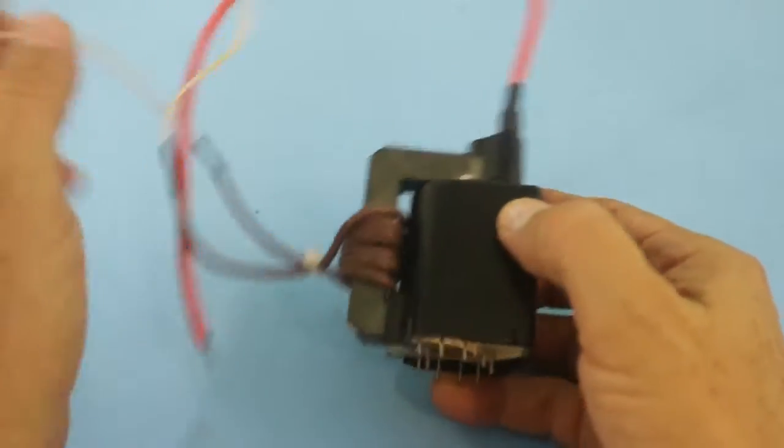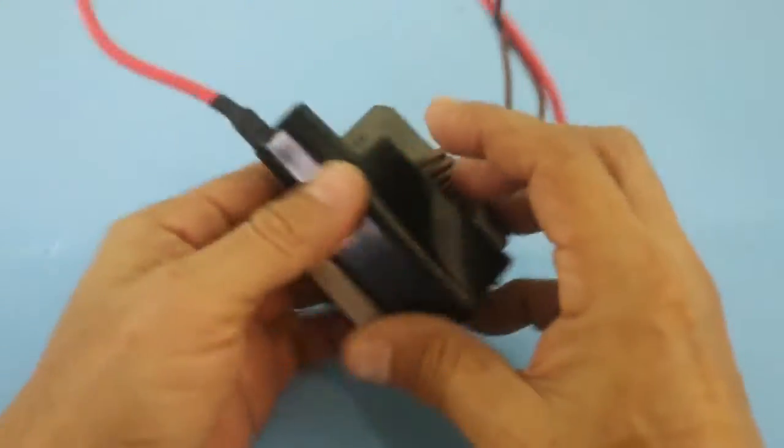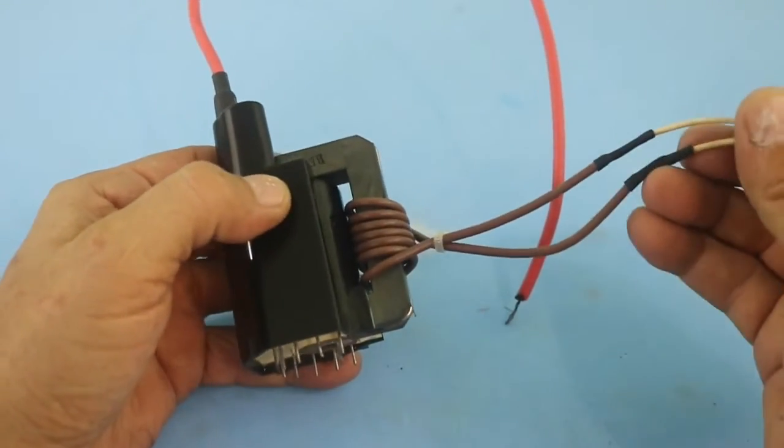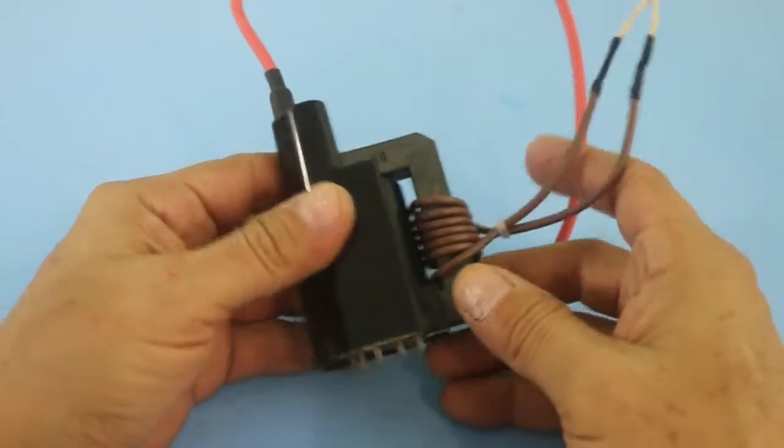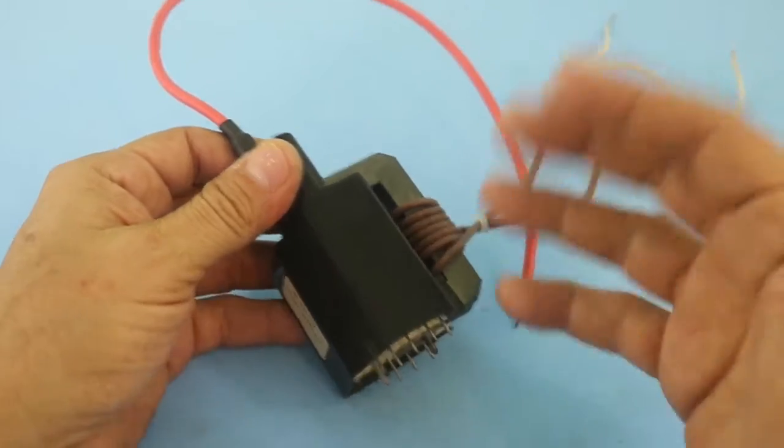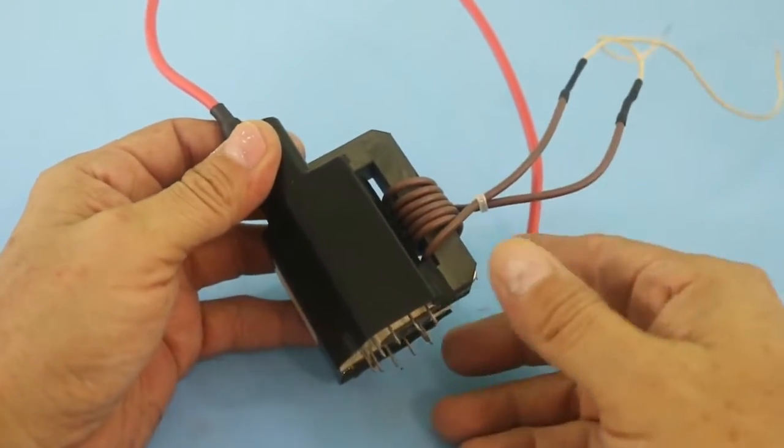Here I have a flyback. If you don't know what it is, it is a specially designed transformer to produce very high voltages, on the order of 30,000 volts or less, between 10 and 30,000 volts.